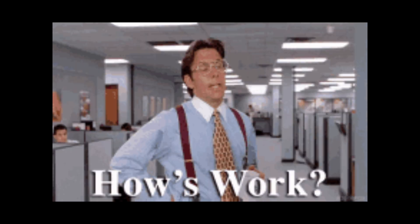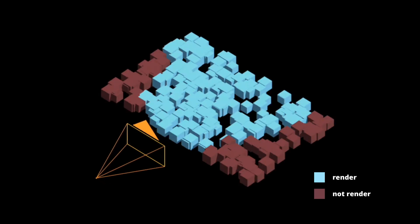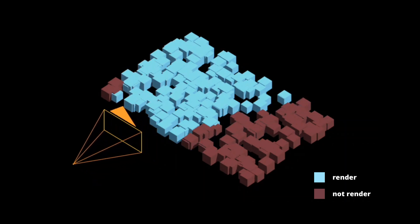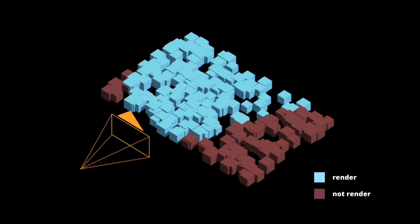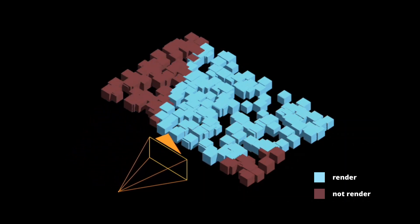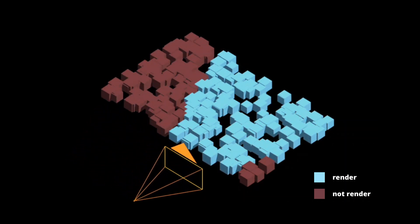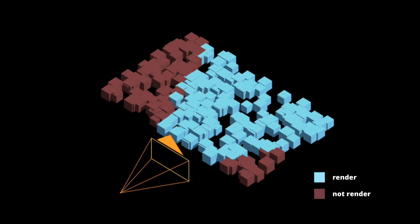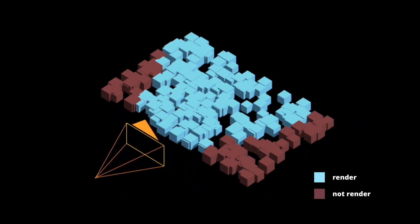How does it work? For each object in the scene, the program checks whether it is inside the frustum's view. If an object is completely outside any of the six planes of the frustum, it gets culled, meaning it won't be drawn.